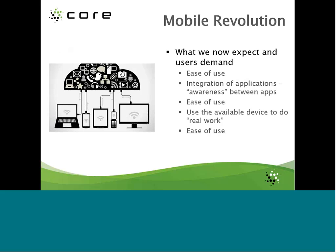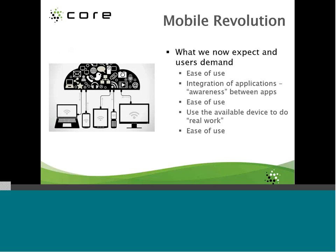There's really been a revolution driven mostly by the personal side of it. End users pretty much demand certain features and functions — ease of use above all, integration across applications, the ability to get an email, open a PDF or Word document, and edit that document, all from whatever device they have at hand, whether it's a smartphone, tablet, or laptop. The real driver behind this mobile revolution is that no matter what device we have, it's got to be easy to use. Otherwise people won't do it.